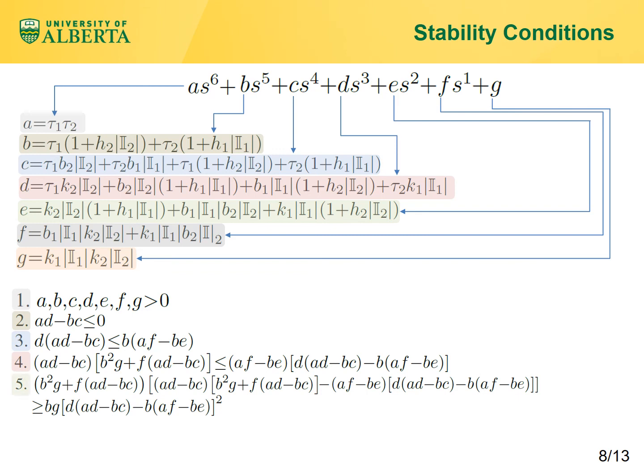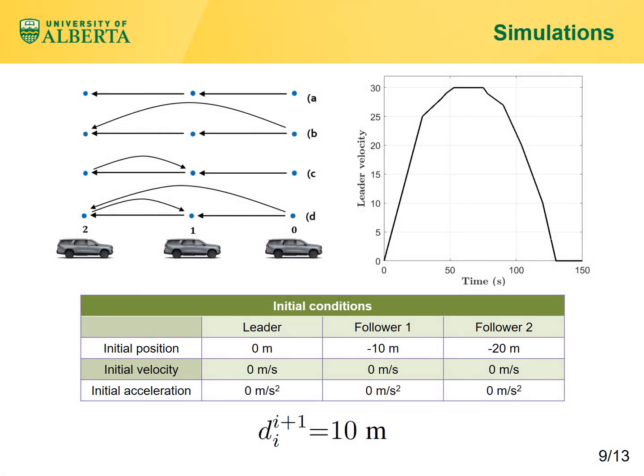We conducted simulations for the two-follower case with four IFTs: IFT-a, IFT-b, IFT-c, and IFT-d. The velocity trajectory for the leader is as shown. Initial velocity and accelerations are zero for all vehicles, initial positions are given in the table, and the desired spacing between vehicles is 10 meters.